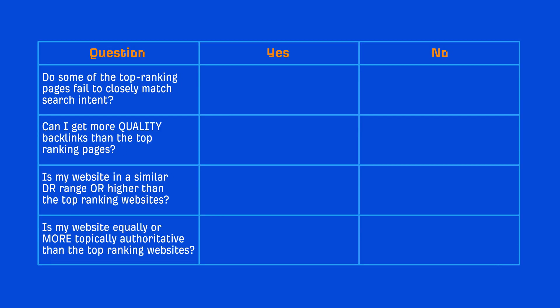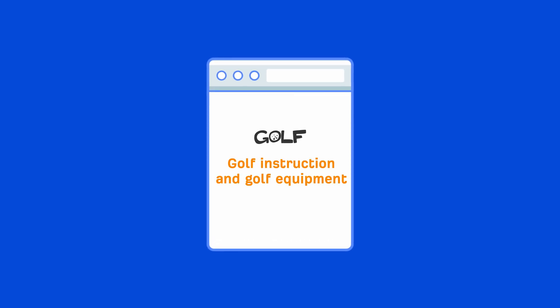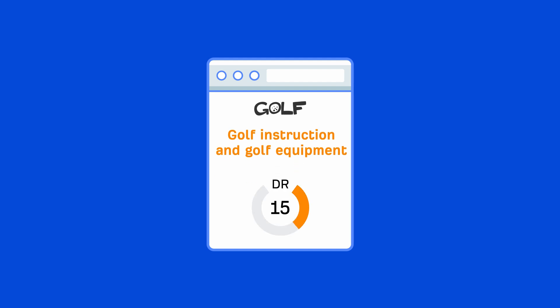Let's look at our full list of yes or no questions. As a very general rule of thumb, the more yeses you can check off, the better your chances of ranking — though SEO is quite nuanced. Let's go through a couple of hypothetical examples for our golf site. Let's say you have a website about golf instruction and you also review golf equipment, and your website's domain rating is low at around 15.